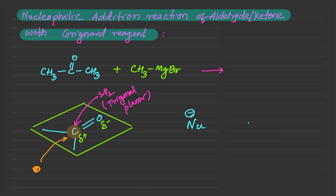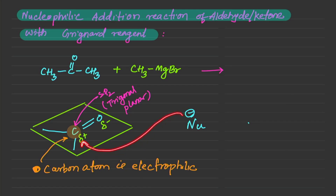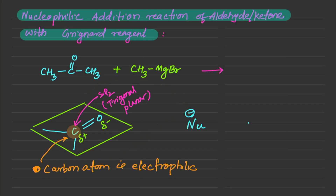Because the carbonyl carbon is electrophilic, it loves electrons. The nucleophile has electrons and will always go towards that carbon atom. Because it is a planar structure, the nucleophile could approach from the top or bottom, and this has stereochemistry implications.